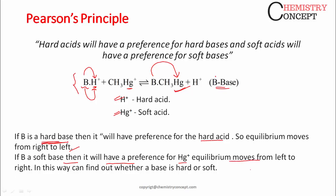In this way, we can find out whether a base is hard or soft by observing whether the equilibrium is on the right or left side, and thereby predict whether B is a hard base or a soft base. I hope this was clear to you. If you have any doubts, you can always ask in our comment section. Please don't forget to like, subscribe, and share this video. Thank you.